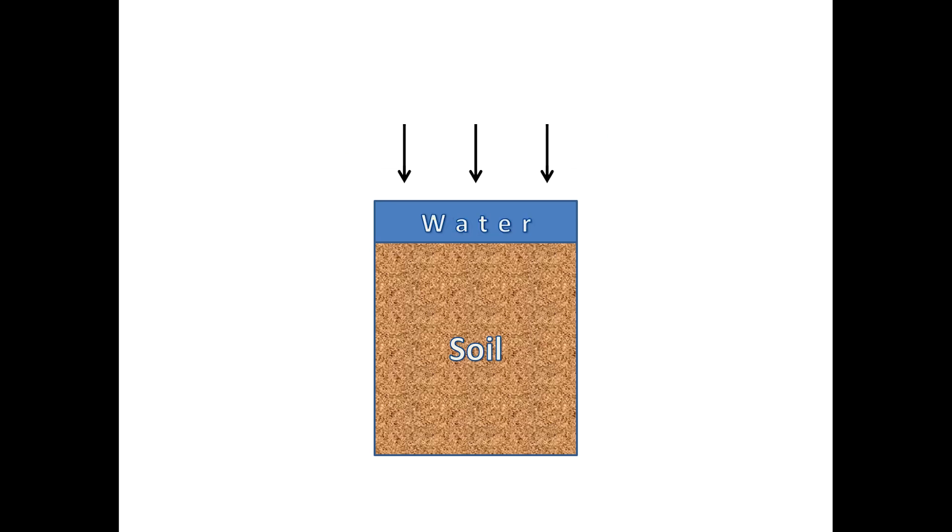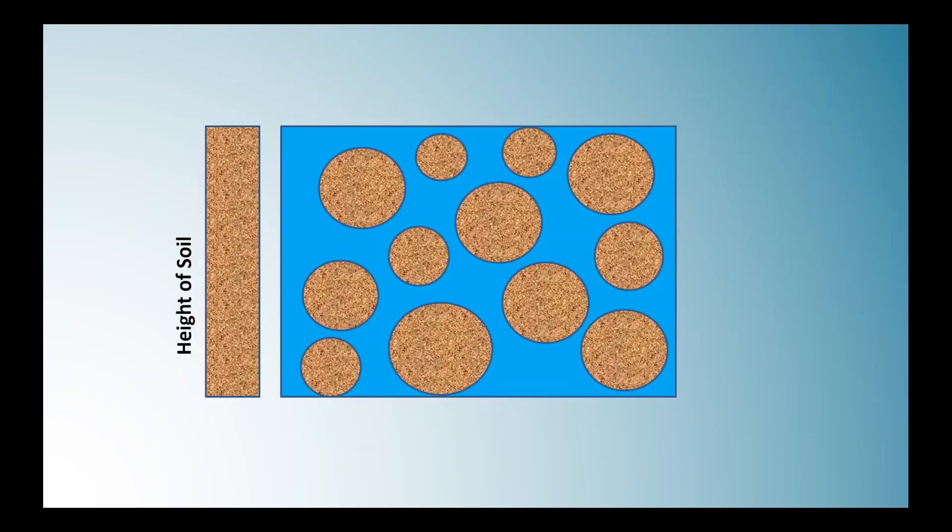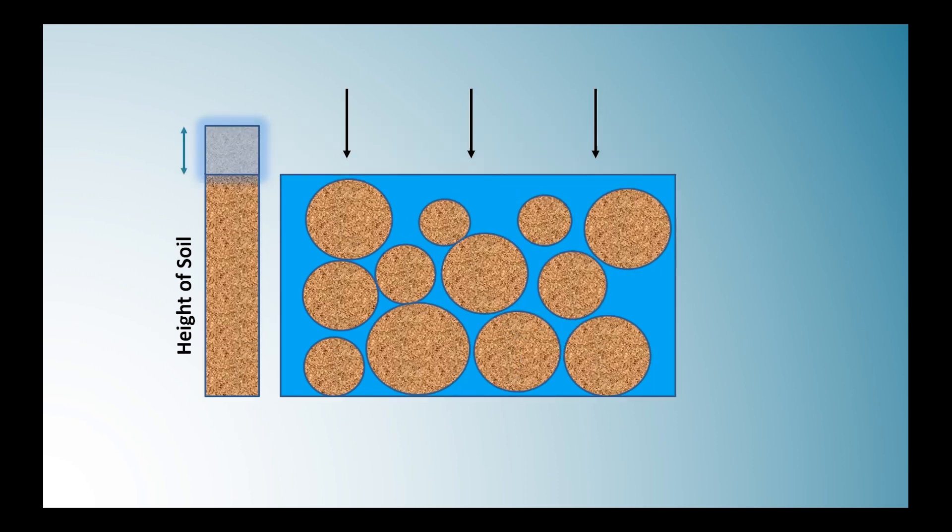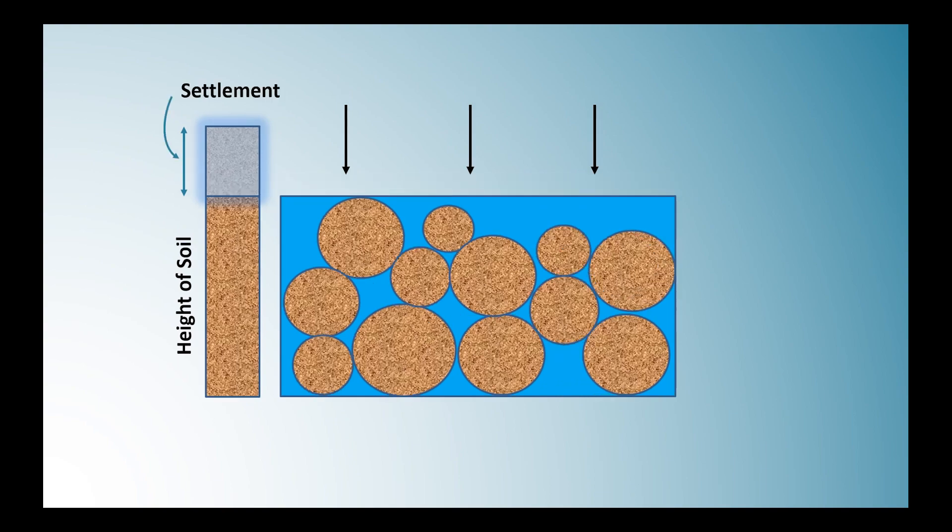This is followed by the expulsion of water from the soil layer. As the water flows out, the solid particles are rearranged due to which the overall height of the soil is decreased. As such, settlement is taking place.